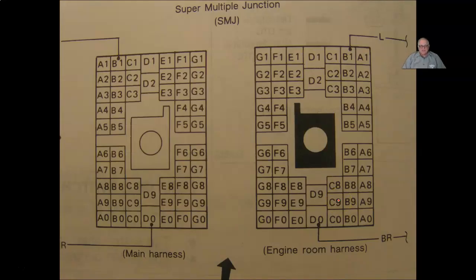Here's their super multiple junction, which other manufacturers would call this a bulkhead connector. You can see the male, female side. There's so many cavities in this that they can't just number it or letter it. They have the columns and rows. So you have A, B, C for the columns.